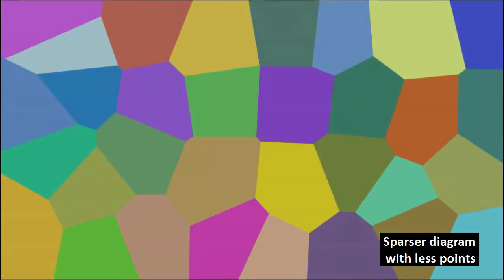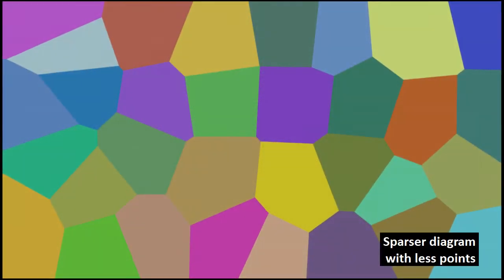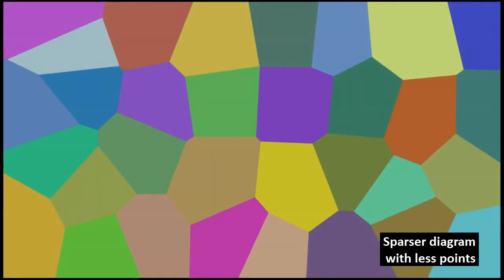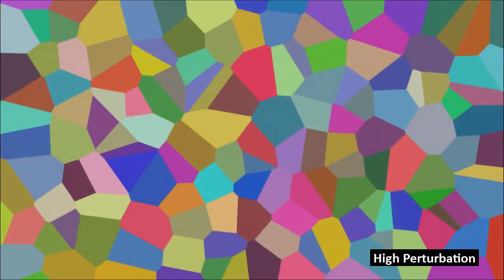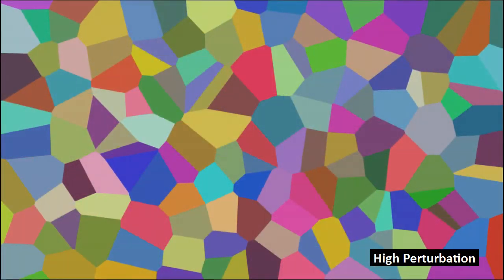You can also change up the look of a Voronoi diagram by having more or fewer control points. For my implementation, you can also tweak how far off-center all the control points are — obviously the greater the value, the weirder the shapes are going to be. I've also implemented borders for each of these areas, and changing up the border width can also create some interesting effects.